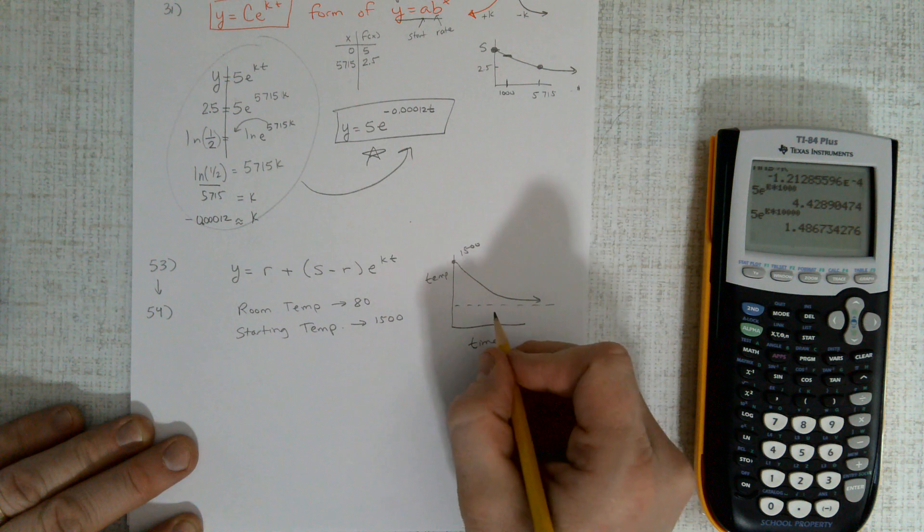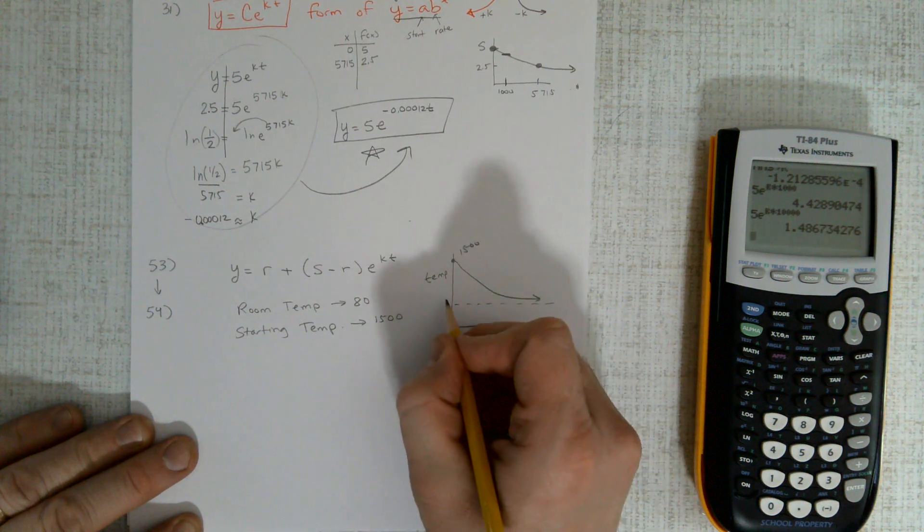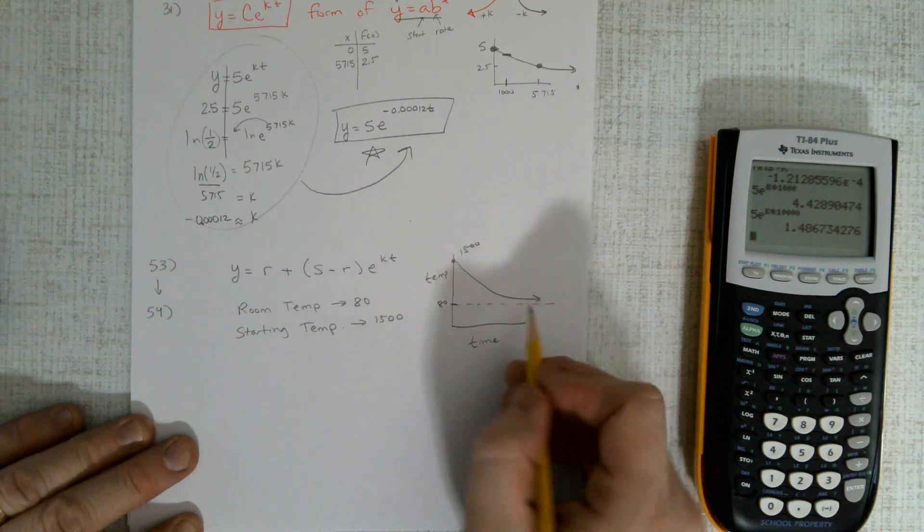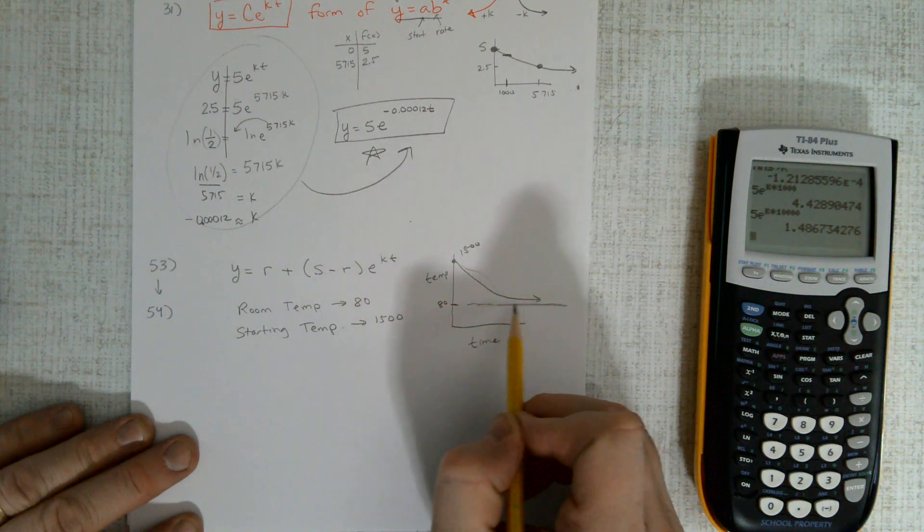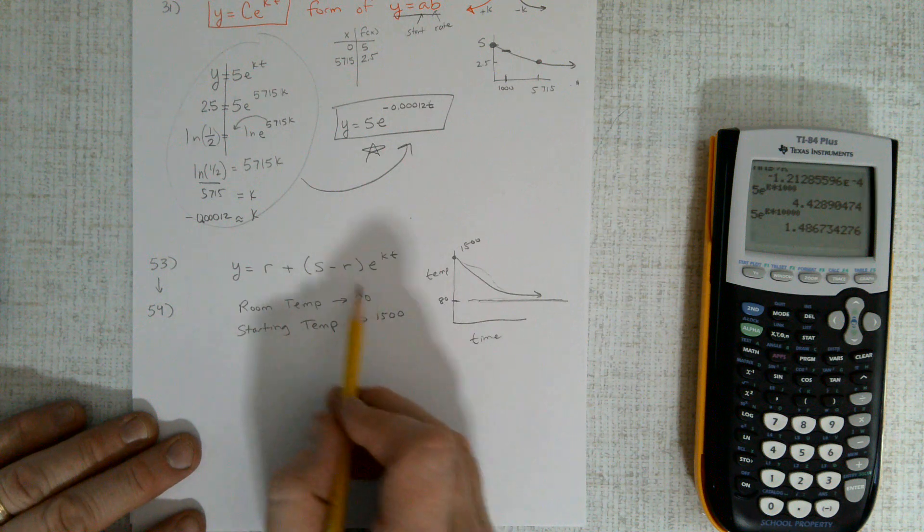But in this problem we have a room temperature of 80 degrees. We kind of have a floor on this—it can't go below 80 degrees. So the temperature of an item cools down to room temperature.